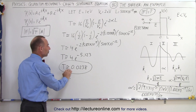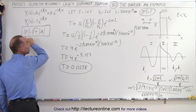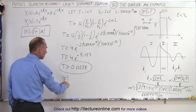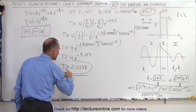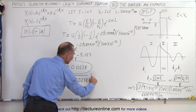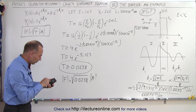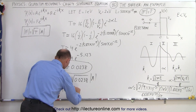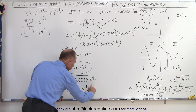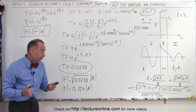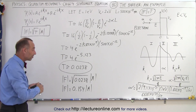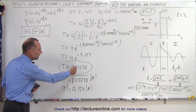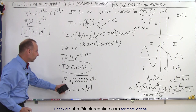This transmission coefficient tells us the amplitude of the particle after it passes through the barrier. The amplitude in region three equals the square root of T — the square root of 0.0238 — times the amplitude on the left side. That gives 0.154 times the left-side amplitude, meaning the amplitude drops to about 15% of what it was. We take the square root of T because energy is proportional to the square of amplitude.